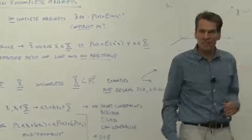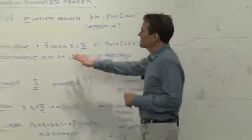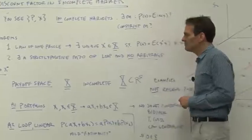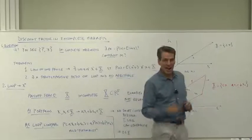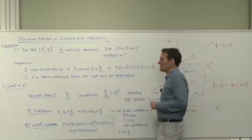The law of one price and no arbitrage are a lot weaker than a utility function, but they are basic assumptions about what investors do and how they behave. Let's do the first theorem: the law of one price and how it implies that there exists a discount factor x*.